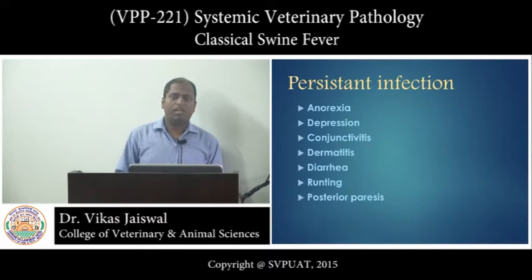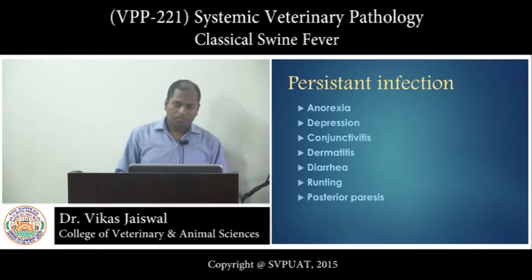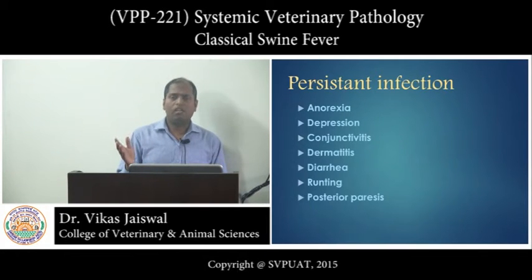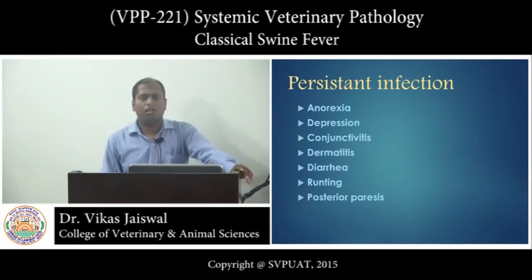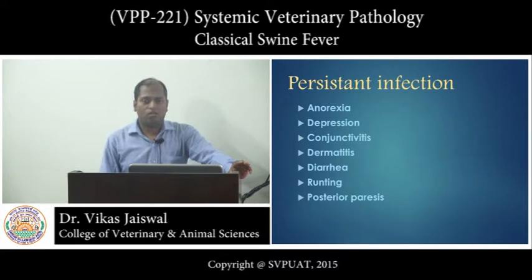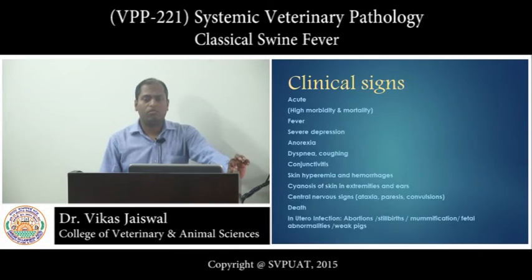Persistent viral infection can be categorized into two categories: chronic and late onset fever. In chronic form, the disease starts as acute disease, but after some time, clinical complications subside because of the appearance of specific antibodies. But after some time, when the immune system is exhausted, secondary bacterial invasion takes place and the virus takes the upper hand. The second category is late onset CSF, caused by persistently viremic immunotolerant pigs which have been infected by intrauterine infection.